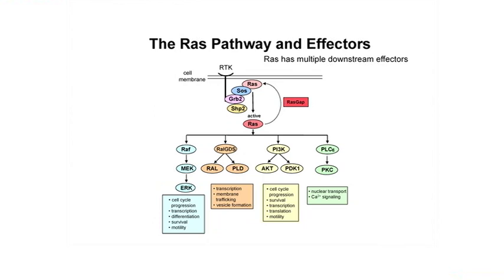There are also RAS GAPs — RAS GTPase-activating proteins — that turn RAS off. Because you've got SOS giving the gas — go, go, go — but then you have to have the brake, just like the pedals on your car. RAS GAPs turn RAS off. So you have to have the go, and you have to have the stop.